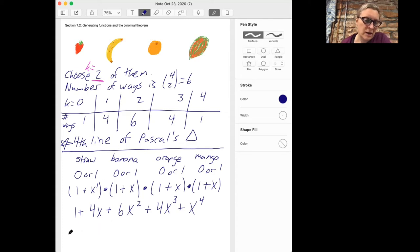So what that tells us is that (1+x) to the fourth is the generating function for the sequence that starts 1, 4, 6, 4, 1, and then continues with lots of zeros.